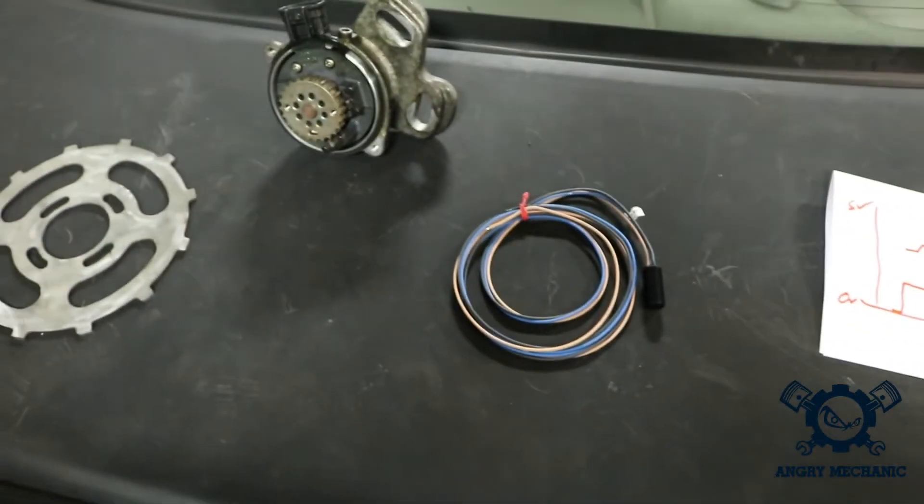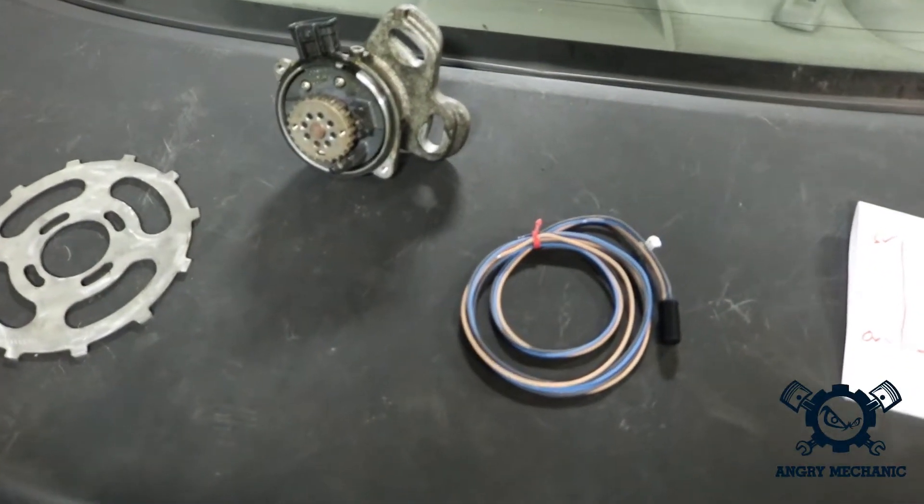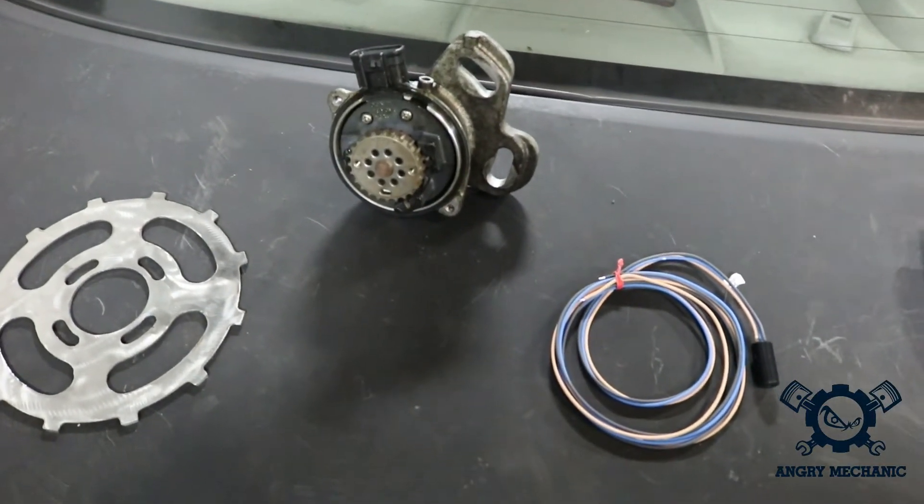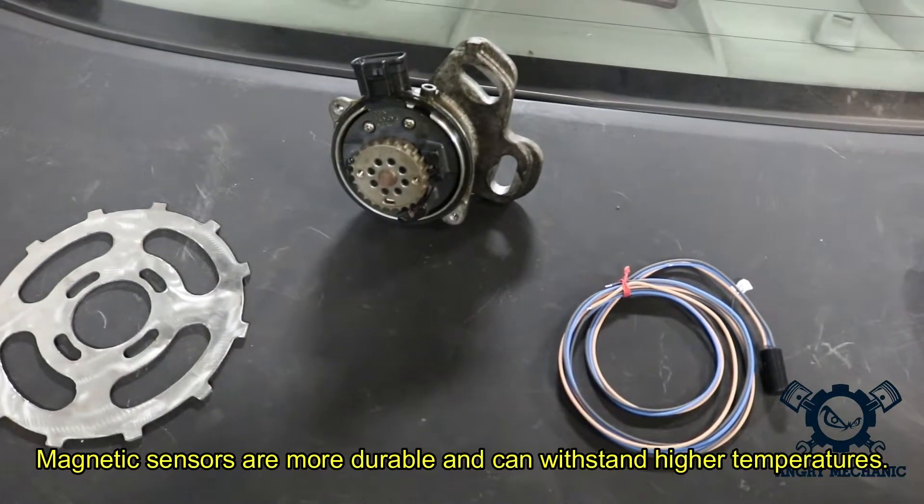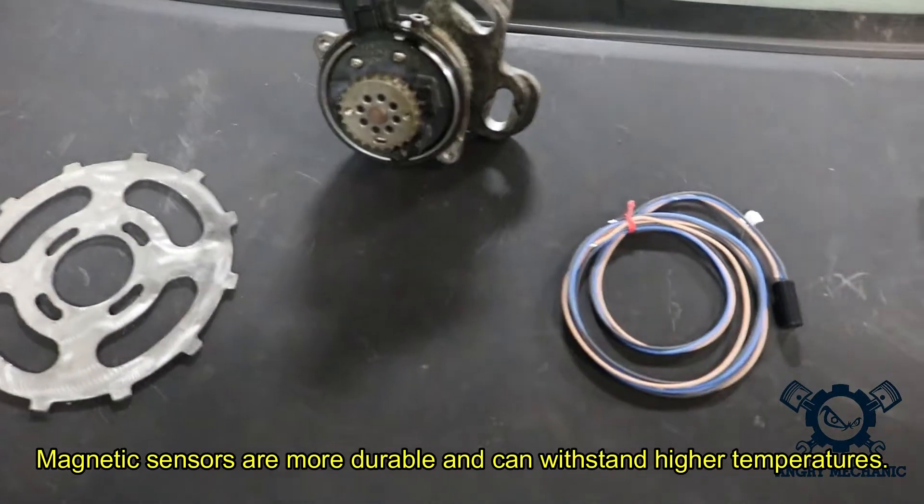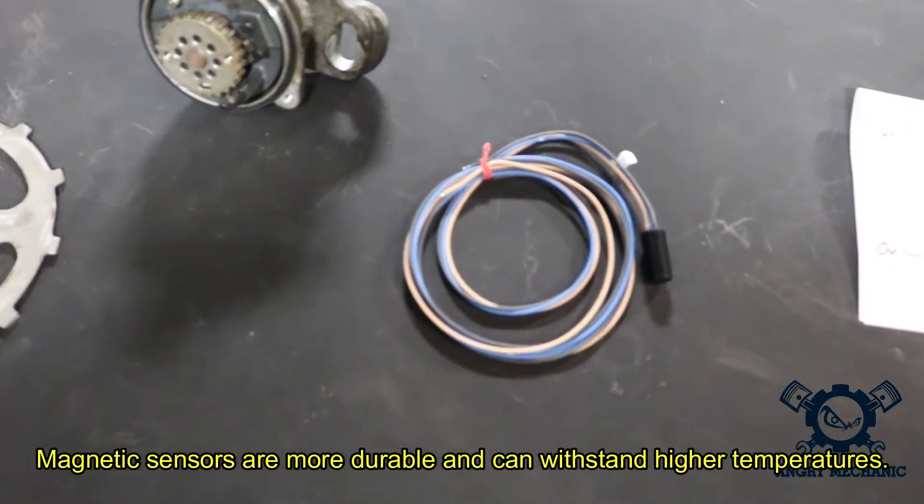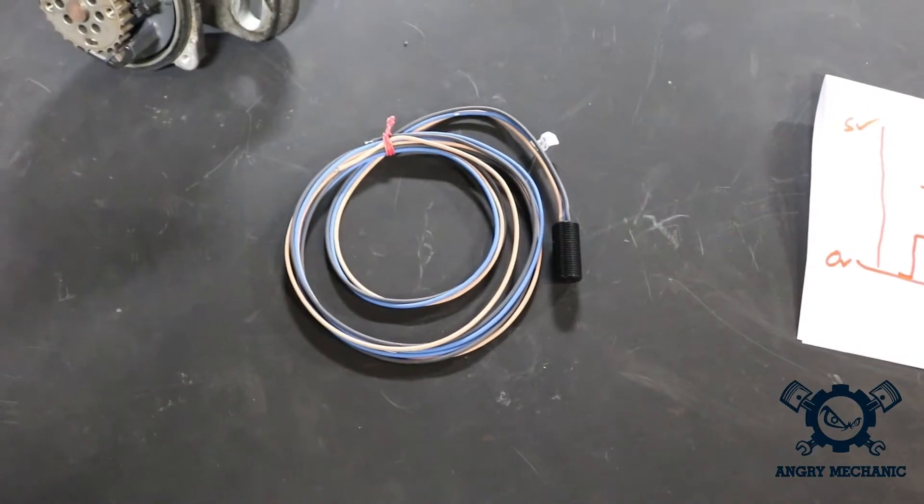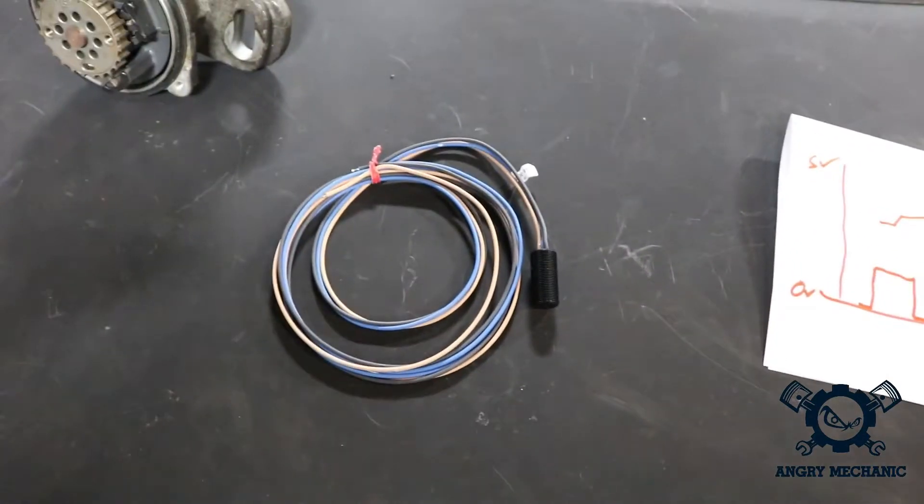So in a nutshell, pros and cons versus magnetic sensor versus Hall effect. I would say pros for the magnetic is that they're much more reliable in a high heat environment, high stress environment. These Hall effect sensors are a little bit more delicate in the sense that they don't like high heat environments as much.